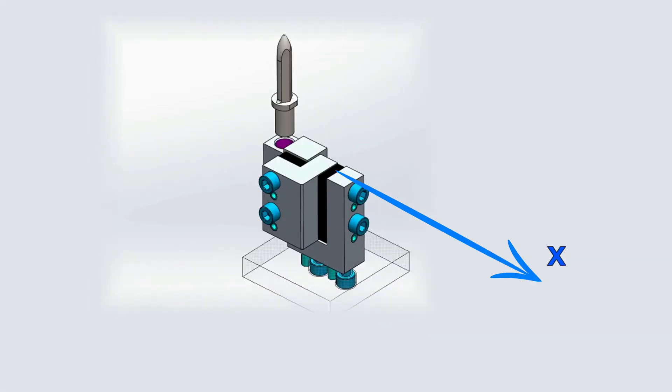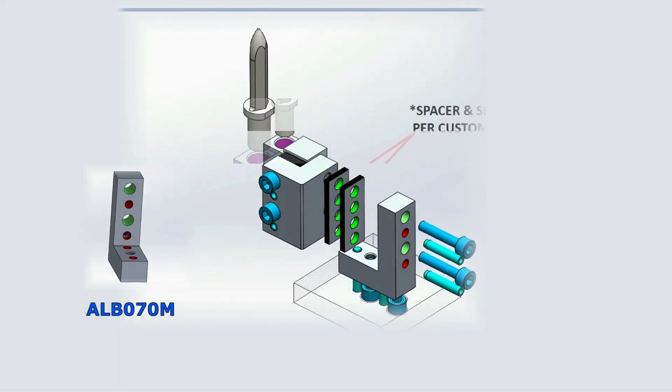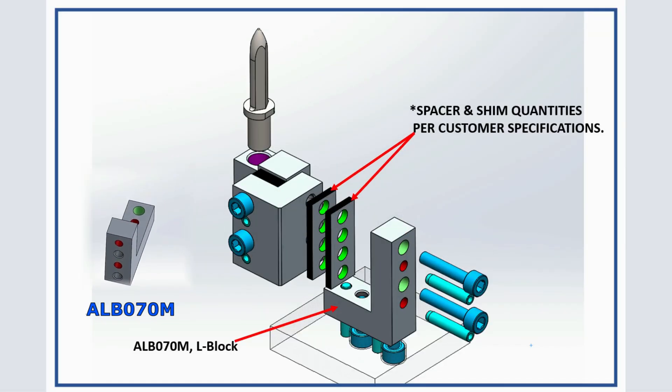X adjustable directions. For the X direction, apply the same: one spacer and one shim kit, and also L-Block ALB070M and fasteners, two socket head cap screws and two pull dowel pins.